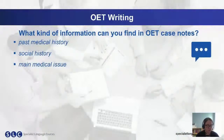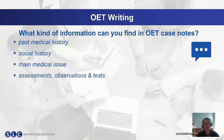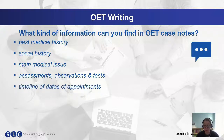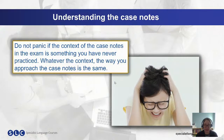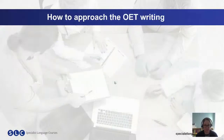So here are some things typically found in OET case notes: past medical history, social history, discharge details, and the main medical issue — which is always on there. Often there are assessments, observations and tests, a timeline of dates and appointments, details of medication, and treatment given — for example, a hip operation, course of antibiotics, and physiotherapy. And of course, the plan for ongoing care and patient care needs. Don't panic if the context in the exam is something you've never practiced — whatever the context, the way you approach the case notes is the same.